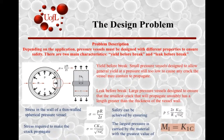First of all, when we start the process, both processes start the same. We come up with equations — specifically the stress in the wall and the stress that is required to make the crack propagate. This is the thickness here, and we just assume a size for the crack.